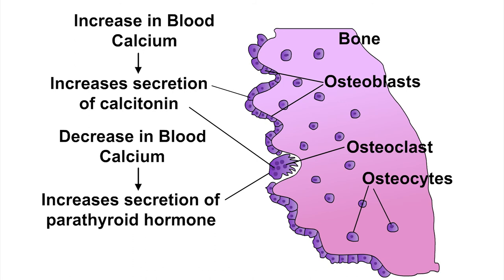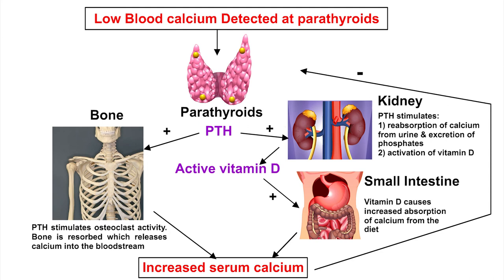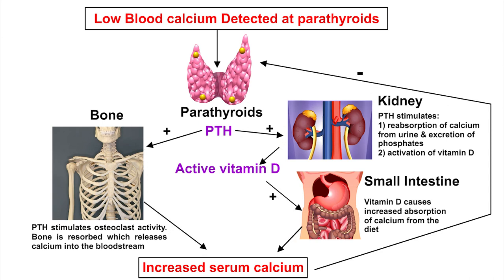Other physiological effects of parathormone include its inhibitory action over the osteoblasts or bone forming cells, bicarbonate reabsorption, and reduction of urine pH.